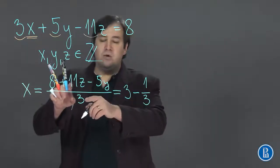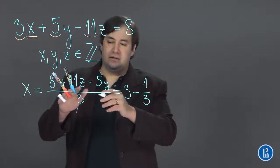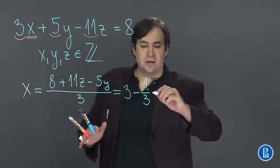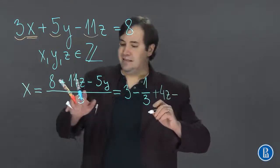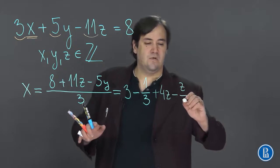Then 11 over 3. 11 over 3 is almost 4. So we can write plus 4 minus 1 over 3 times z.